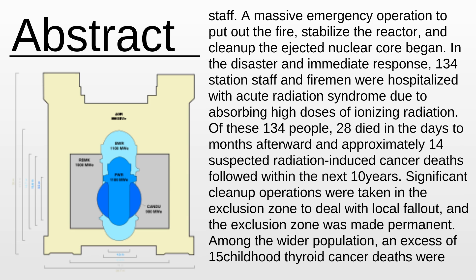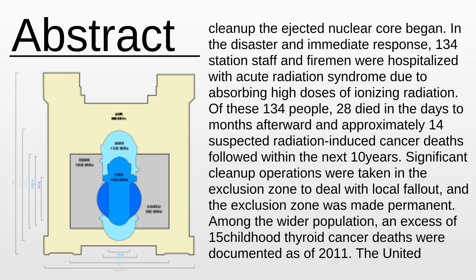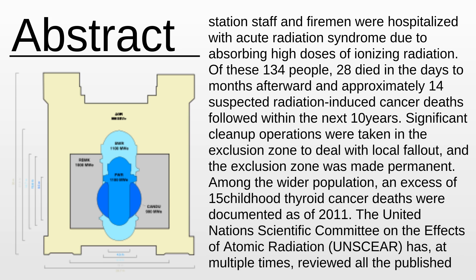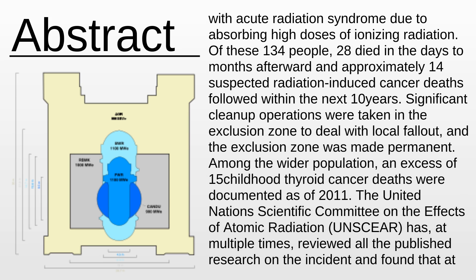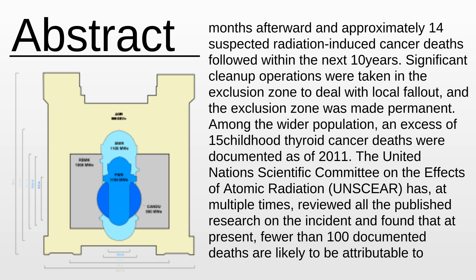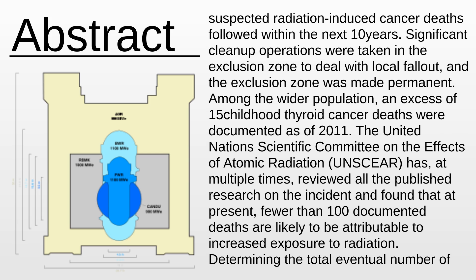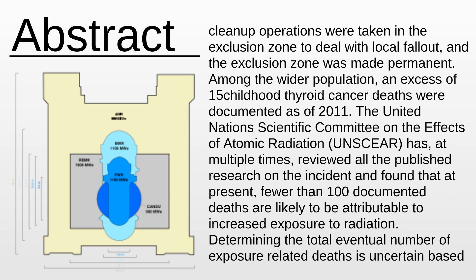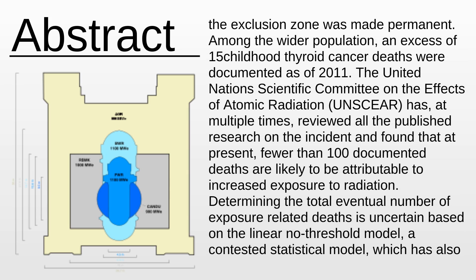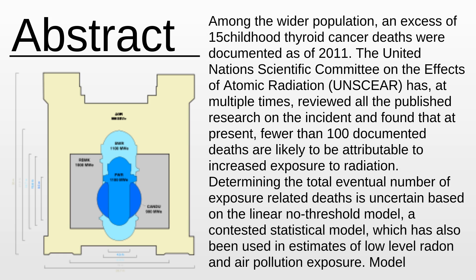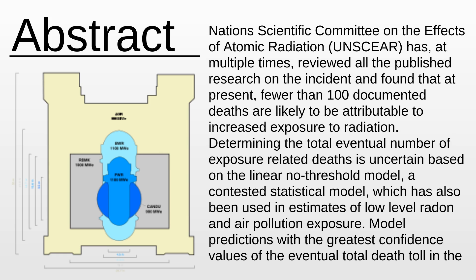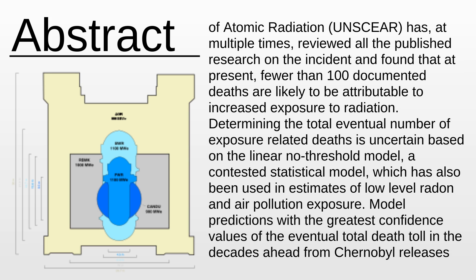The reactor explosion killed two of the reactor operating staff. A massive emergency operation to put out the fire, stabilize the reactor, and clean up the ejected nuclear core began. In the disaster and immediate response, 134 station staff and firemen were hospitalized with acute radiation syndrome due to absorbing high doses of ionizing radiation. Of these 134 people, 28 died in the days to months afterward, and approximately 14 suspected radiation-induced cancer deaths followed within the next 10 years. Significant cleanup operations were taken in the exclusion zone to deal with local fallout, and the exclusion zone was made permanent. Among the wider population, an excess of 15 childhood thyroid cancer deaths were documented as of 2011.